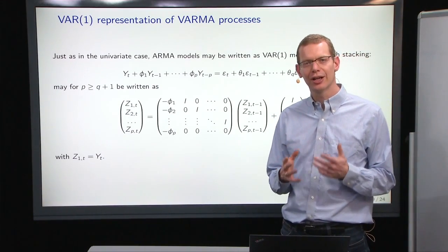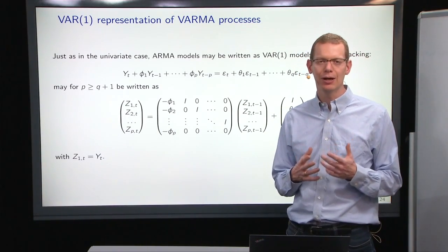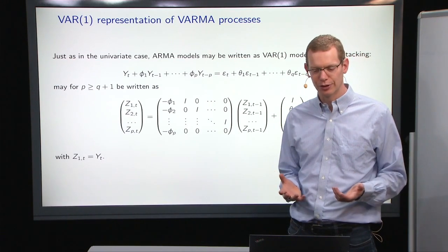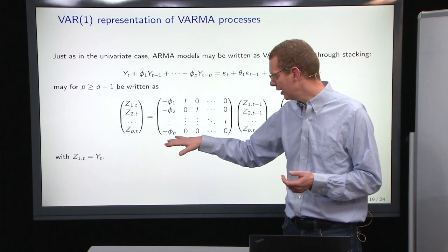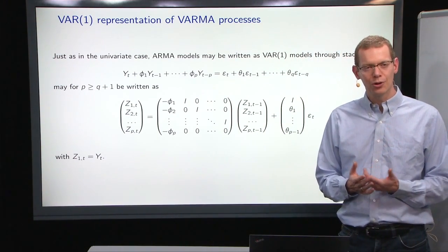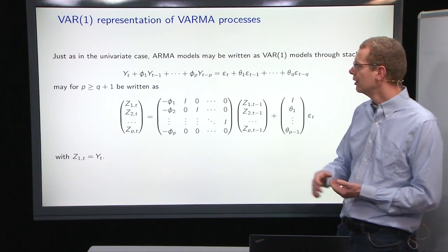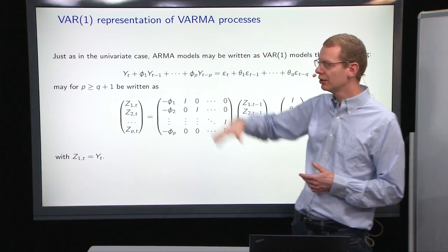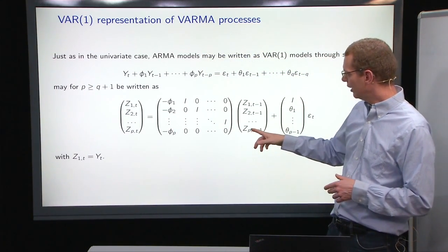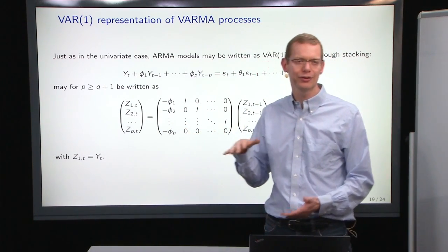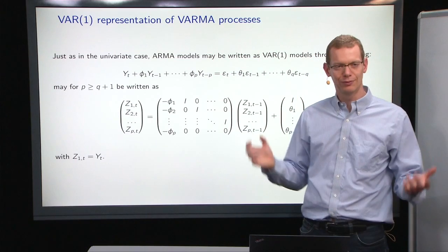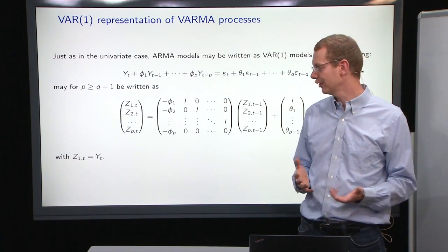Now, one of the things that I like very much about ARMA processes is that you can write any process as a first-order model. You can take any ARMA, being multivariate or univariate, and you can write it as a first-order model where you just expand the dimension of that system to enclose what you have in your model.